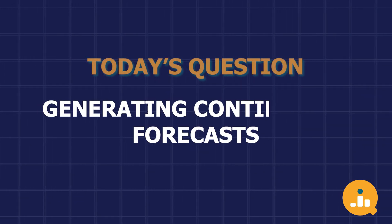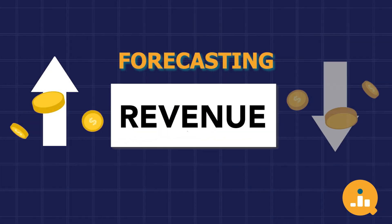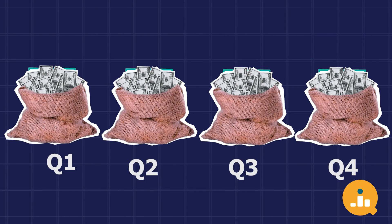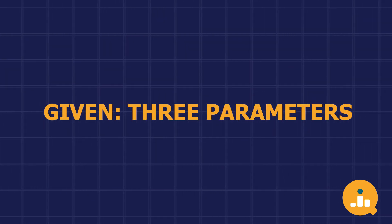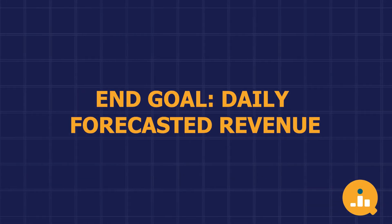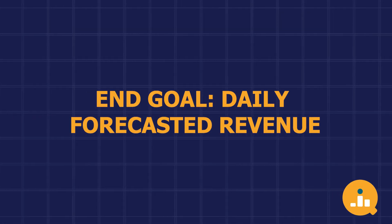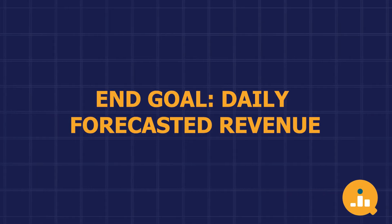The question says we have to generate continuous forecasts. We have to forecast the revenue for a certain target over the next quarter for a certain company. There are three parameters given to us: N, which is the number of days; total revenue target, which is XYZ; and our third parameter is day one revenue. How would you build a function to return a list of daily forecasted revenue starting from day one to the end of the quarter?